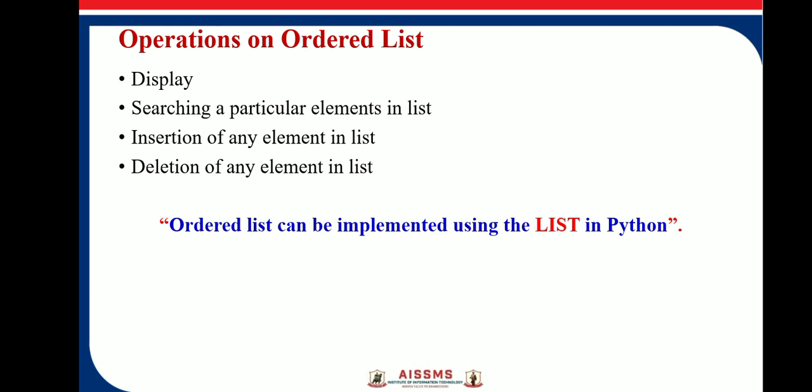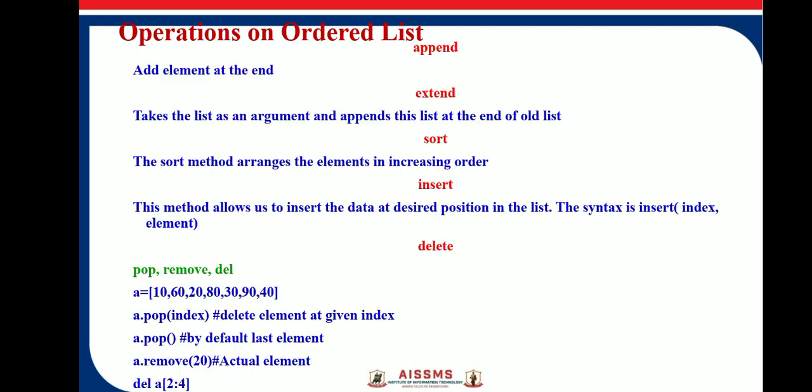Here are the operations performed on a list in Python. The first one is append. Append adds an element at the end of a list. For example, if a = [10, 60, 20, 80, 30, 90, 40], we can append an element using a.append(variable), which will add the element at the end of the list. Similarly, there is another function called extend.